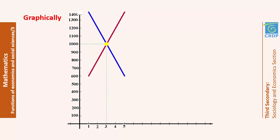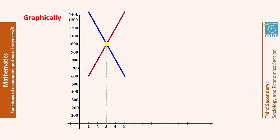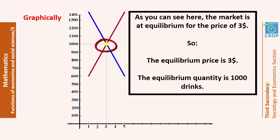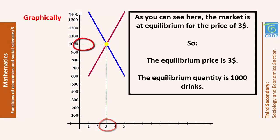A graphical interpretation of this equilibrium: the blue line is for demand and the brown one is for supply. These two lines intersect at a point with coordinates (3, 1000), meaning the market is at equilibrium for a price of $3. The equilibrium price, which is the abscissa of this intersection point, is equal to $3, and the ordinate, which is 1,000, is the equilibrium quantity.